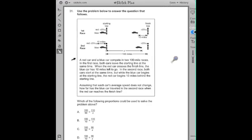A red car and blue car complete a 100-mile race. In the first race, both cars leave the starting line at the same time. When the red car crosses the finish line, the blue car has 10 miles left to go.